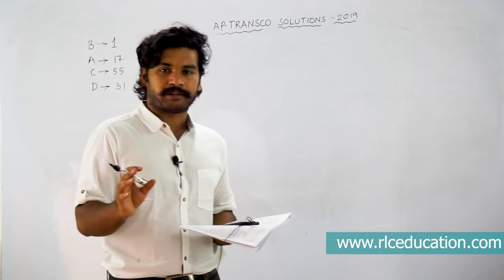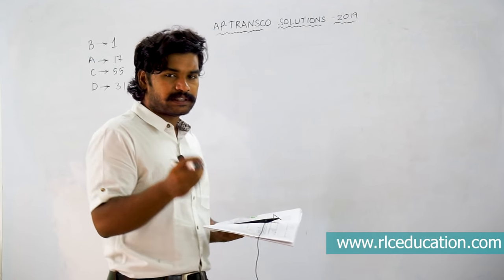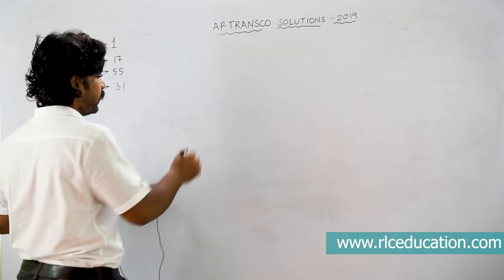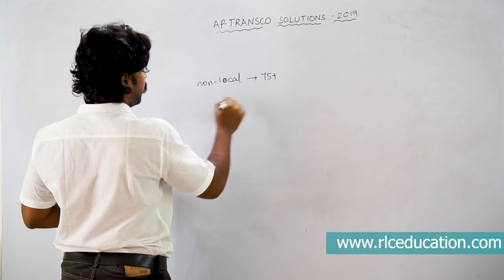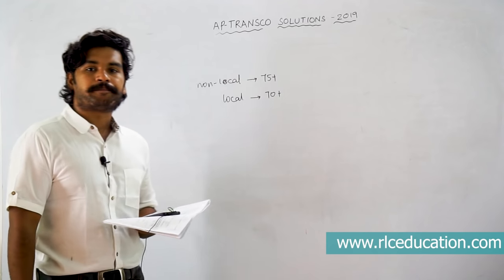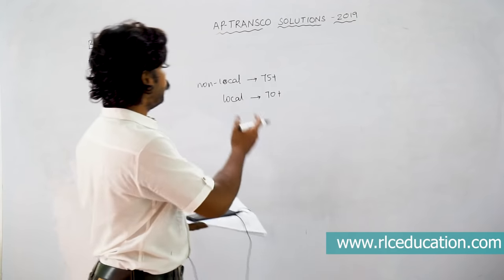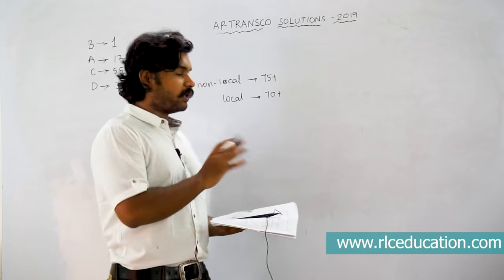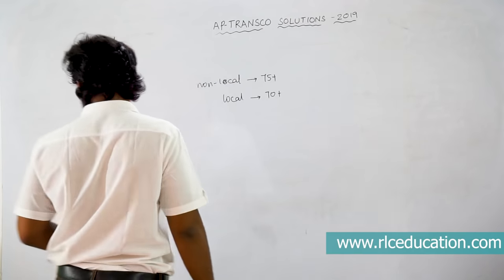Regarding the cutoff — and people are asking about this — as far as my guess, and I am not declaring this as exact, the cutoff may be approximately 75 plus for non-local students and around 70 plus for local students. If 30 to 45 extra minutes had been given, this cutoff would have jumped by 10 to 12 marks more, since each student could solve 10 to 12 more questions.